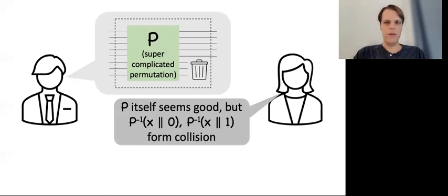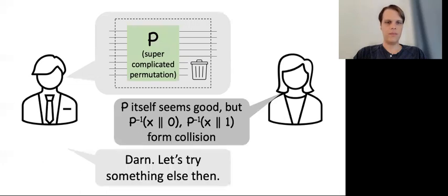Basically, you can invert the hash function on any output just by arbitrarily selecting the values for the discarded bits and then inverting P. This violates one-wayness and also allows for finding collisions. So Bob goes back to the drawing board.